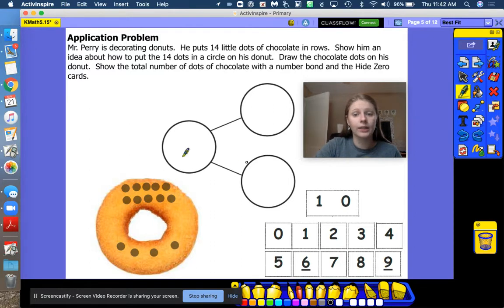Now what are the two parts that we need to use to fill in our number bond? Look at the picture and look at the number bond. So what is this part right here? This is our whole. So how many chocolate chips does he have all together on his donut? Fourteen. How do we write fourteen? A one and a four. Great job.